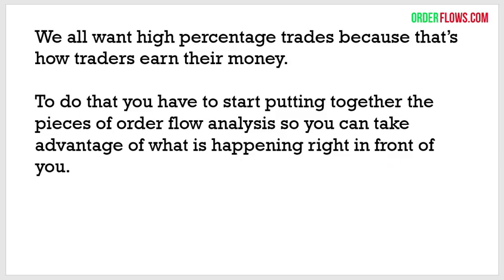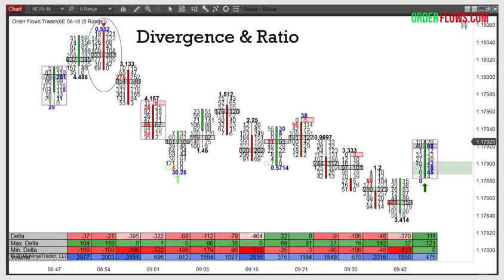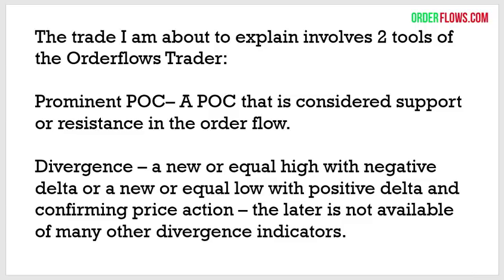The last thing I'll talk about is the high percentage order flow trade setup. We all want high percentage trades — that's how you make your money. You have to put together pieces of order flow analysis to take advantage of what's happening right in front of you. For those who have been following me for years, you know I talk about the order flows divergence and ratio setup. It's a very high percentage trade setup, one of my bread and butter setups — great for reversals at highs or lows of the day. It involves two tools: prominent points of control and divergence — a new or equal high with negative delta, or a new or equal low with positive delta, with confirming price action.